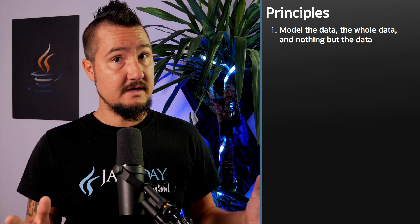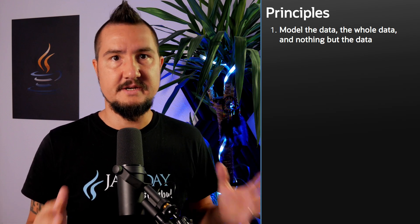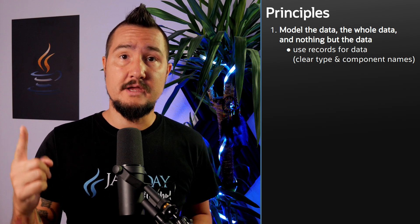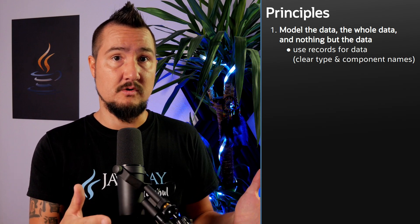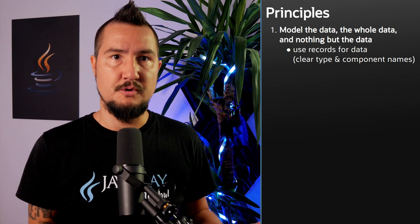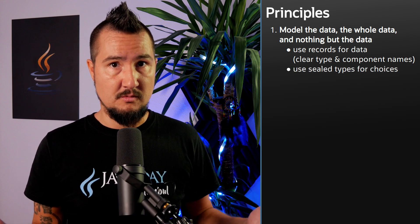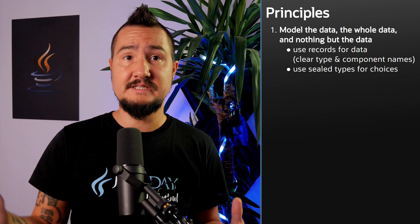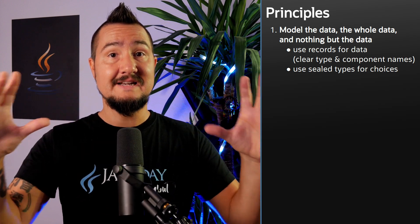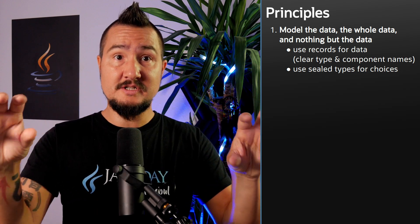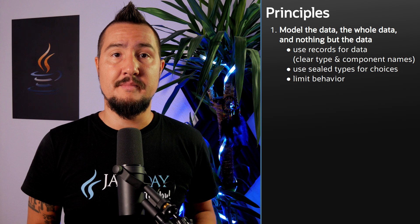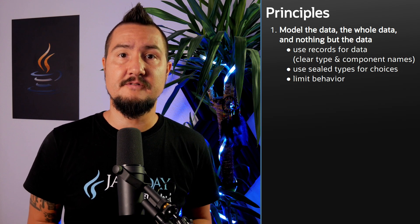Brian formulates four principles. First, model the data, the whole data, and nothing but the data. Records should model data — make each record model one thing, make it clear what each record models, and choose clear names for its components. Where there are choices to be modeled, such as a search can result in no match, an exact match, or a few fuzzy matches, model these as sealed classes and model each alternative with a record. Behavior in record classes should be limited to implementing derived quantities from the data itself, such as formatting.